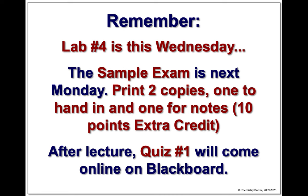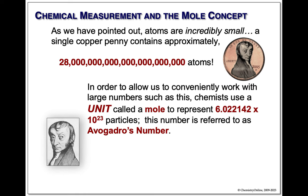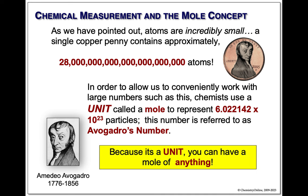We have talked about atoms and how small they are — a copper penny has 28.6 billion atoms. In order to deal with these phenomenal quantities, chemists at the direction of Amadeo Avogadro developed a unit called a mole. It represents 6 times 10 to the 23rd particles. That's a phenomenally large number. We'll see some demonstrations about just how big this is. This is what we refer to as Avogadro's number.